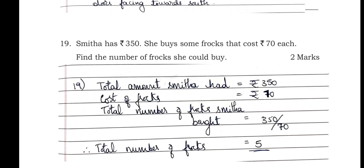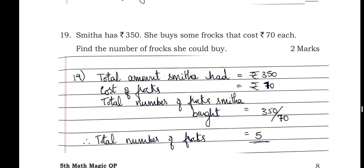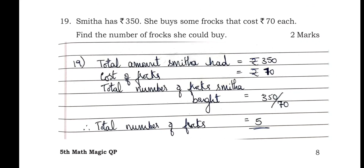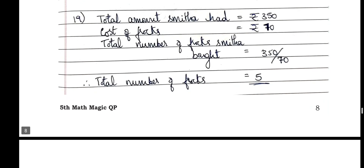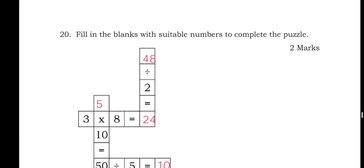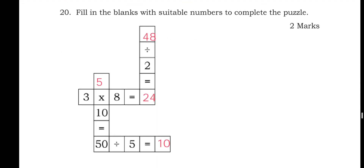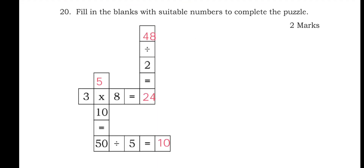Smitha has ₹350 and buys frocks that cost ₹70 each. Find the number of frocks she could buy. Total amount = ₹350; cost of one frock = ₹70. Total frocks = 350 ÷ 70 = 5 frocks.